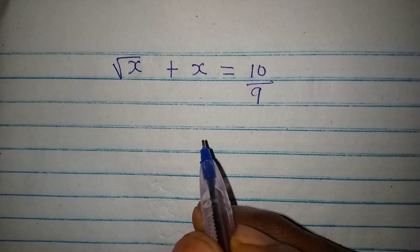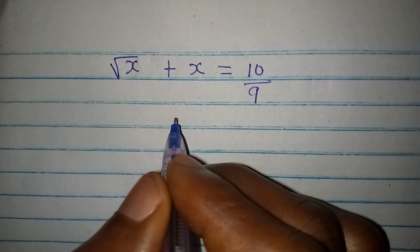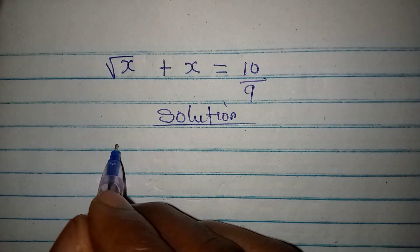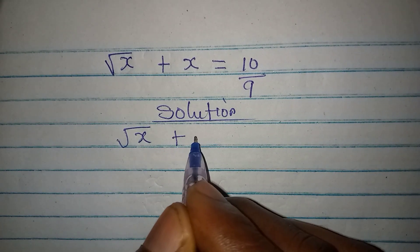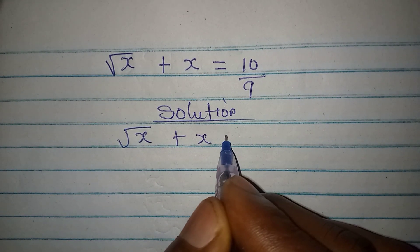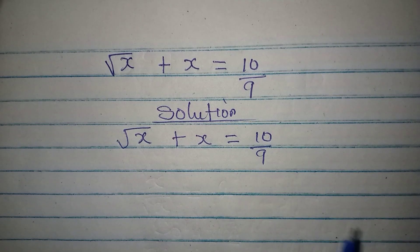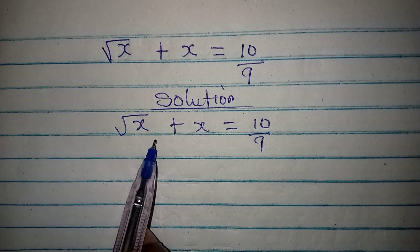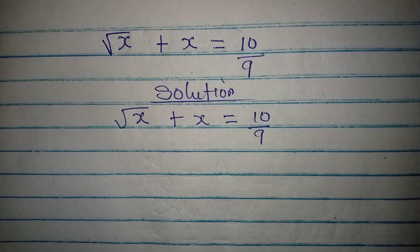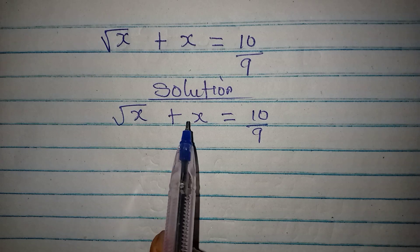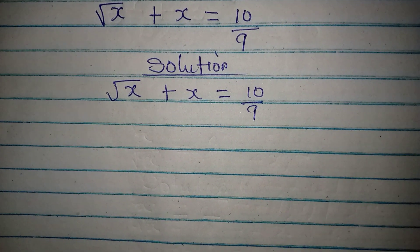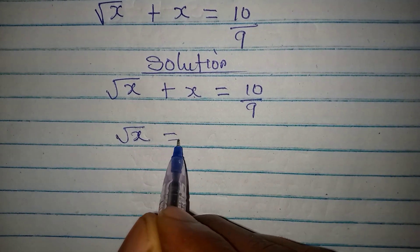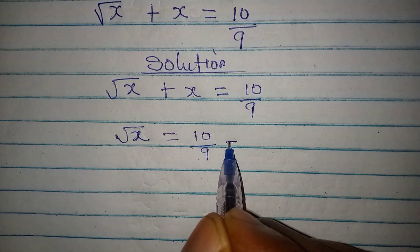Hello everyone, let's provide the solution to this problem. We have square root of x plus x equal to 10 over 9. Trust me, it will be very difficult to predict what the answer is, so follow the steps. The first thing is taking x to the other side, so we have square root of x equal to 10 over 9 minus x.